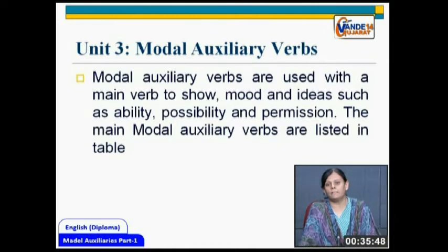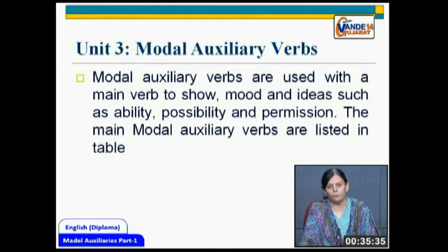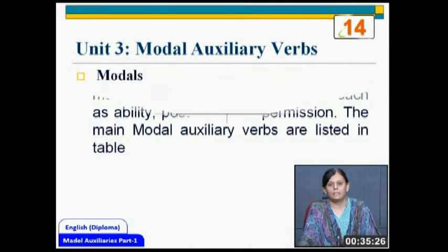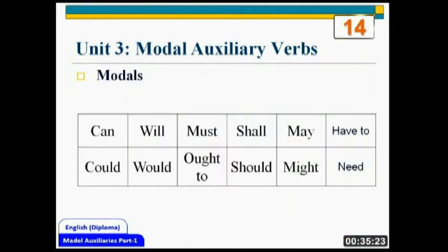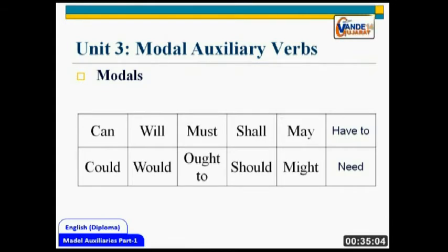The main modal auxiliary verbs are listed here. They show mood and ideas like ability — if you want to suggest your ability, or if you want to talk about the possibility of anything happening, or you want to take permission — basically, we use all the modal auxiliaries. These modal auxiliaries include can and could, will and would, must, ought to, shall, should, may, might, have to, and need. Today we are going to discuss all these modal auxiliaries in detail.